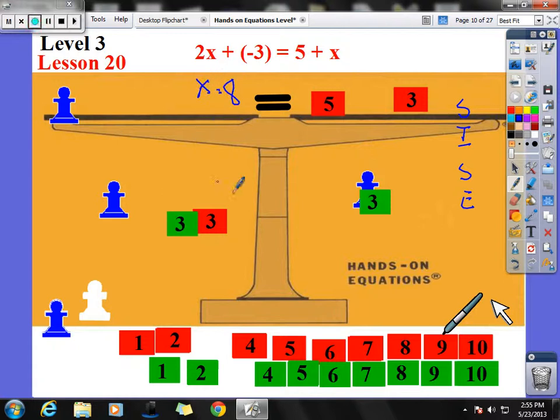If x equals 8, and I put an 8 in here, I have 2 times 8, which is 16. 16 plus negative 3. 16 plus negative 3 is going to be 13. And on this side I have 5 plus 8. And 8 plus 5 or 5 plus 8, and that equals 13. And I do 13, check, 13.